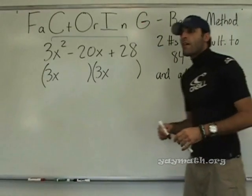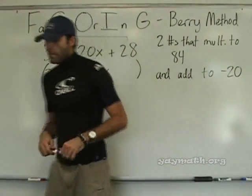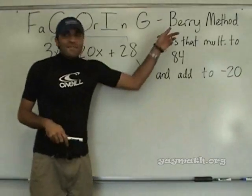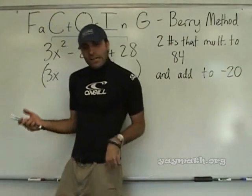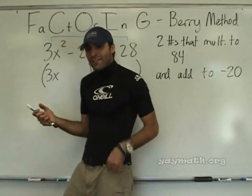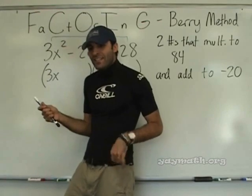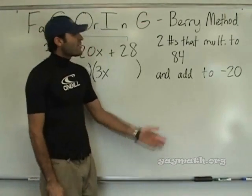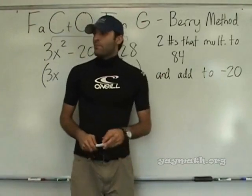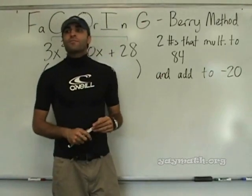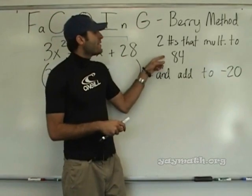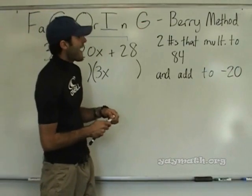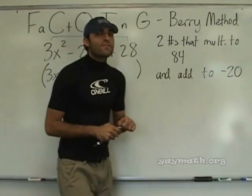Is this the Berry Method? This is called the Berry Method. So, put the two numbers. What are two numbers that multiply to 84 and add to negative 20?